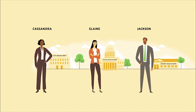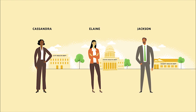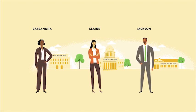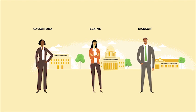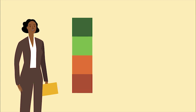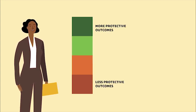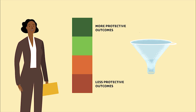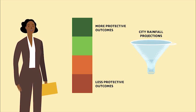The second step of the evaluation framework. Illustrated practitioners Cassandra stands in front of the city health department, Elaine in front of the state health department, and Jackson in front of the county health department. To describe the new city greening project, Cassandra's logic model uses two design principles: color coding her outcomes and using rainfall projections to illustrate the project's potential impacts.